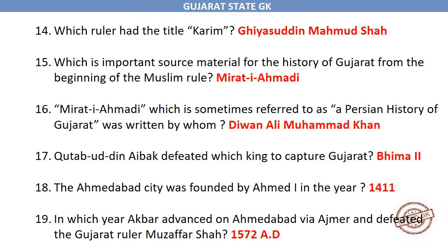Qutb-ud-din Aibak defeated which king to capture Gujarat? Bhima II. The city of Ahmedabad was founded by Ahmed I in the year 1411. In which year did Akbar advance on Ahmedabad via Ajmer and defeat the Gujarat ruler Muzaffar Shah? 1572 A.D.